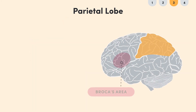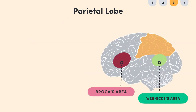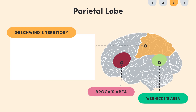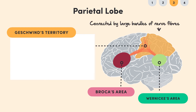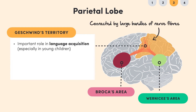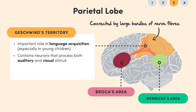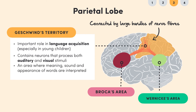There is another structure in the parietal lobe that connects Broca's area and Wernicke's area together, which we will cover in a moment. This structure is called Gershwin's territory and is connected by large bundles of nerve fibres. Gershwin's territory is thought to play an important role in language acquisition, especially in young children. This part of the brain contains neurons that process both auditory and visual stimuli, so it's thought to be an area where the meaning, sound and appearance of words are interpreted.